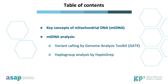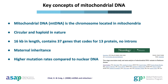We will cover some of the key concepts and two primary approaches to mitochondrial DNA analysis: variant calling and haplogroup analysis, and we will outline some of the major limitations. Mitochondrial DNA is characterized by its circular structure and haploid nature. It spans approximately 16 kilobases and contains 37 genes that encode for 13 proteins, all lacking introns, unlike nuclear DNA. Mitochondrial DNA follows a maternal inheritance pattern and demonstrates higher mutation rates than nuclear DNA.